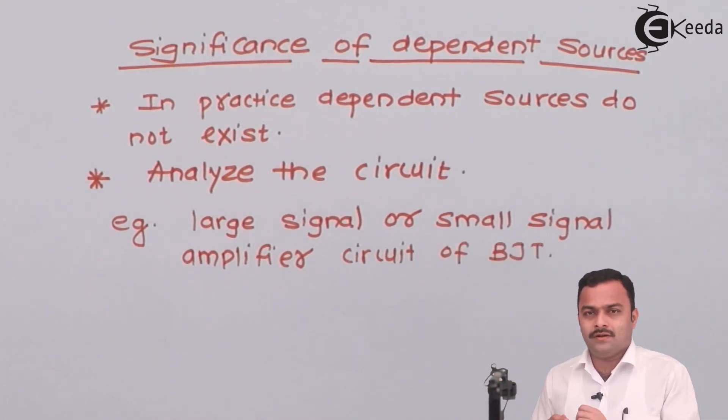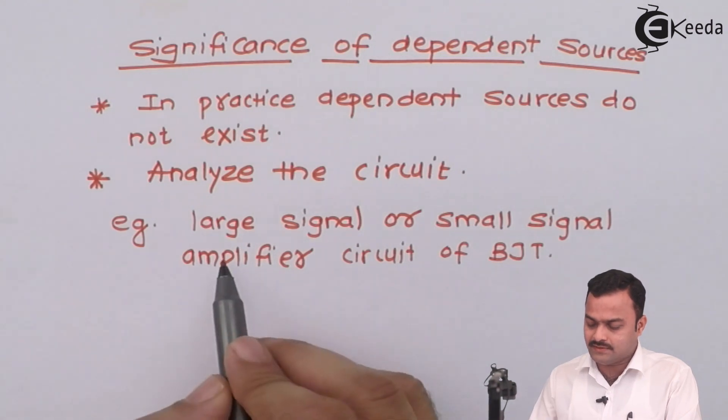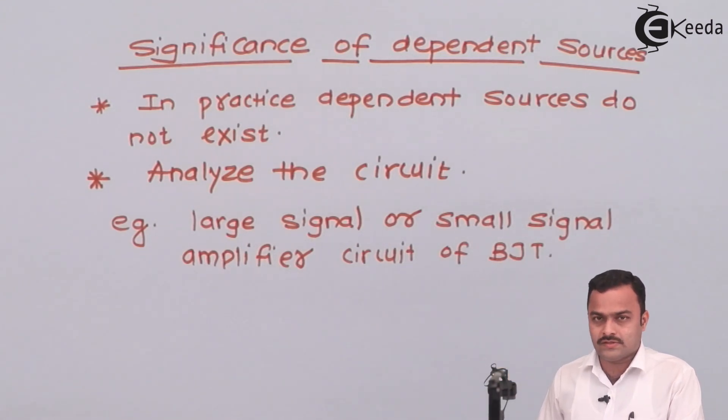The whole concept of base current, collector current, base emitter voltage, collector emitter voltage, transconductance and input impedance everything can be represented with the help of dependent sources. So here we have seen different types of independent and dependent sources, more importantly the classification of dependent sources and significance in the electronic circuits. Thank you.